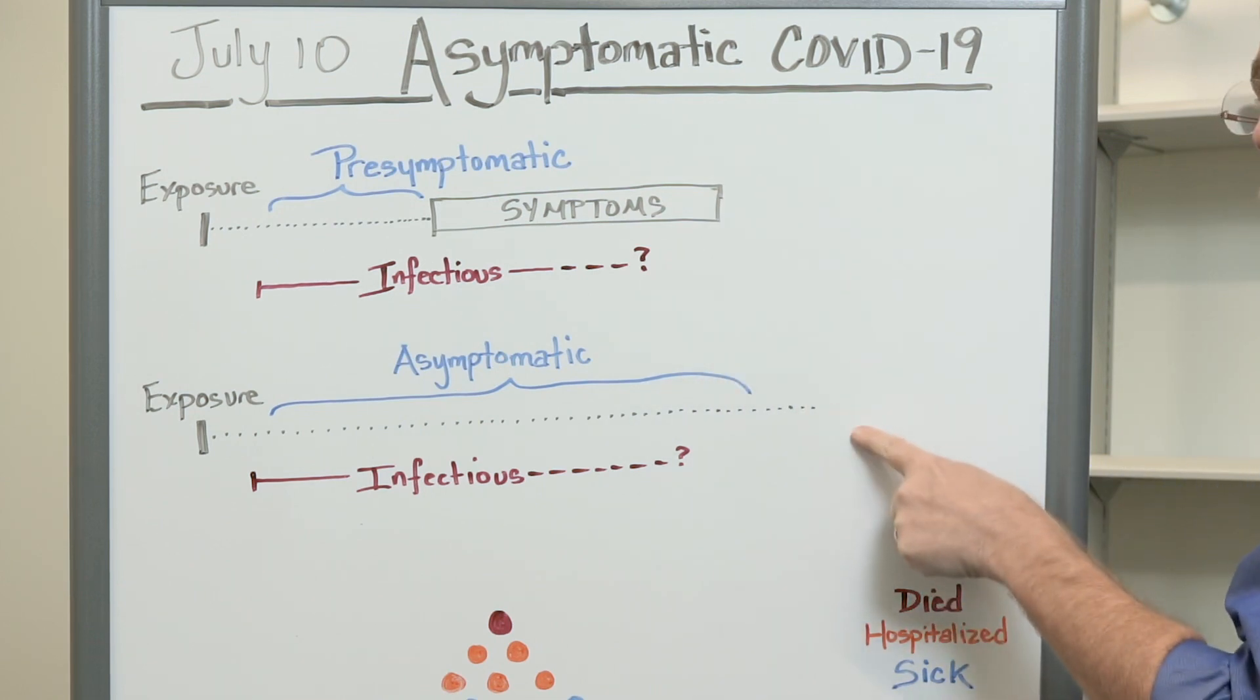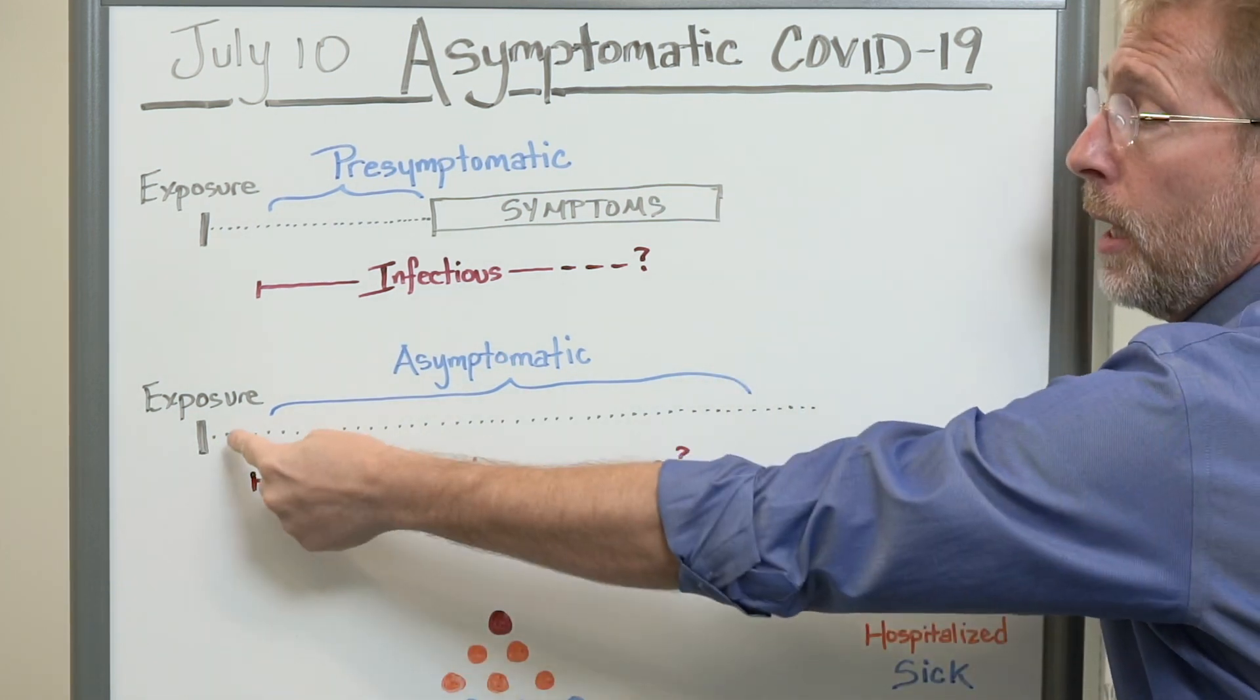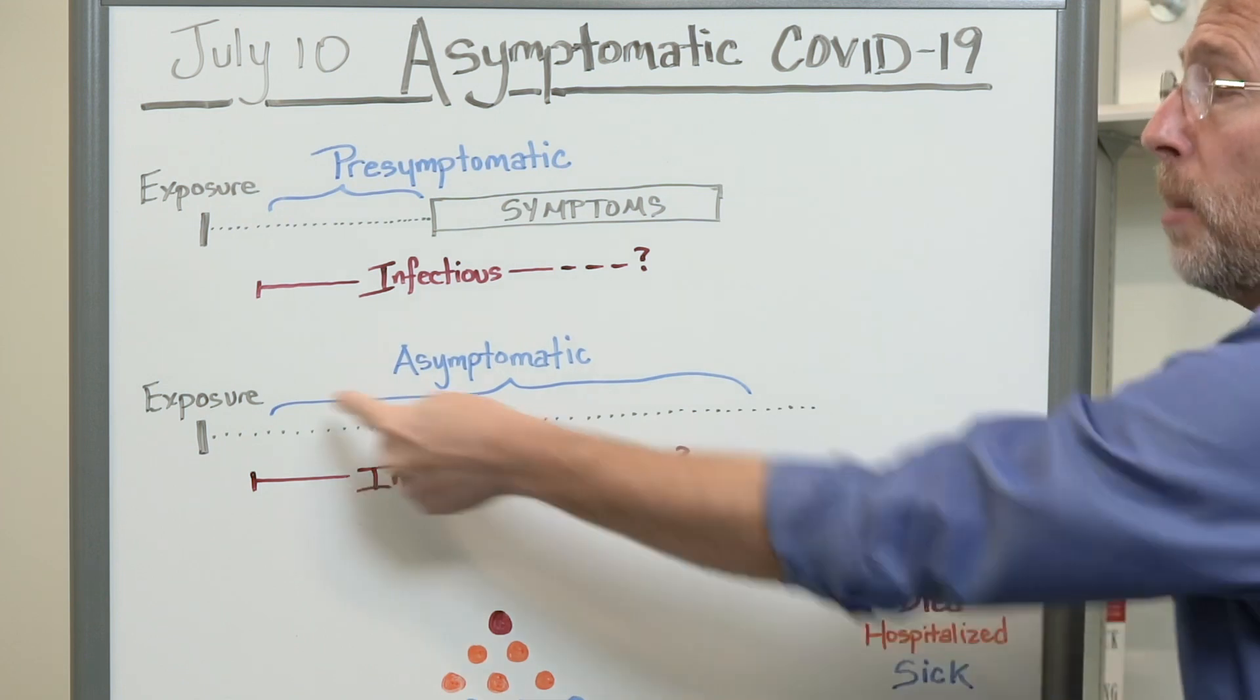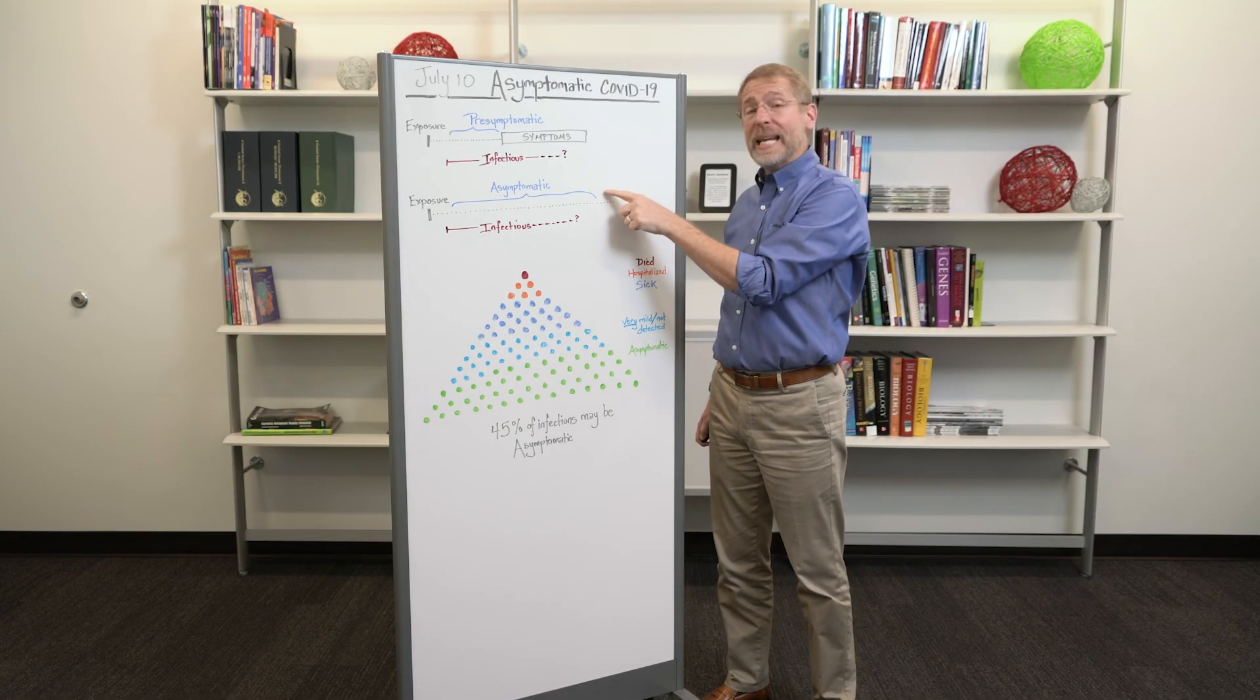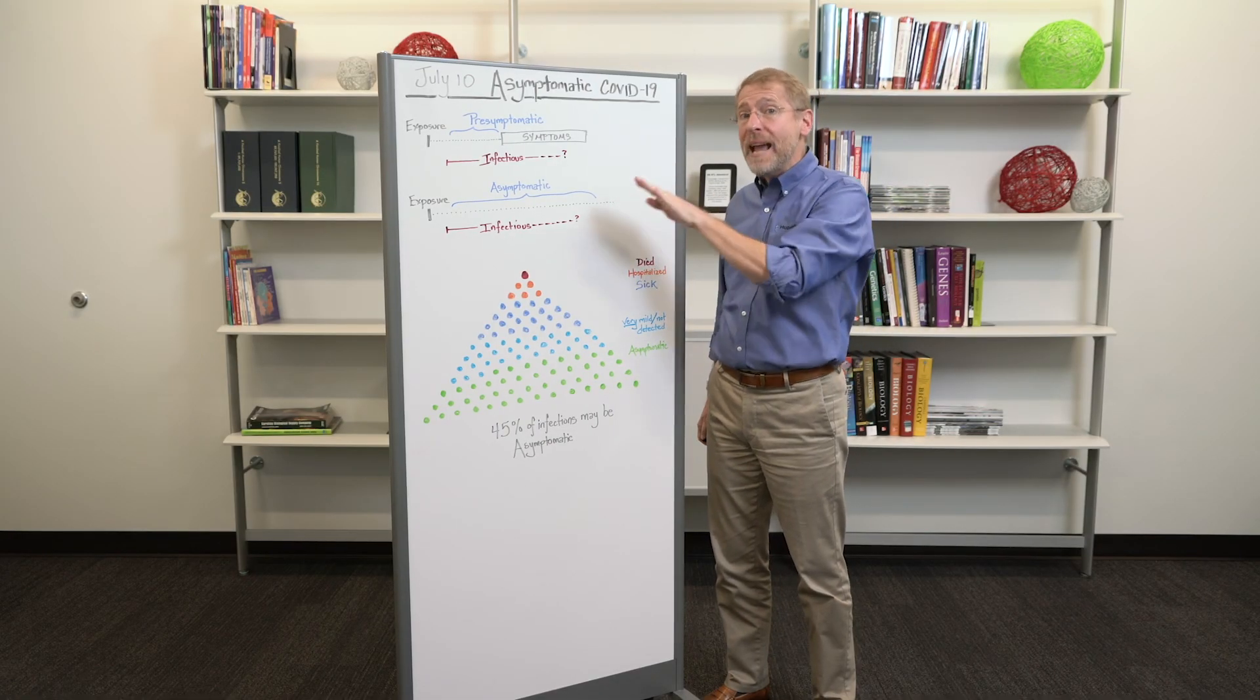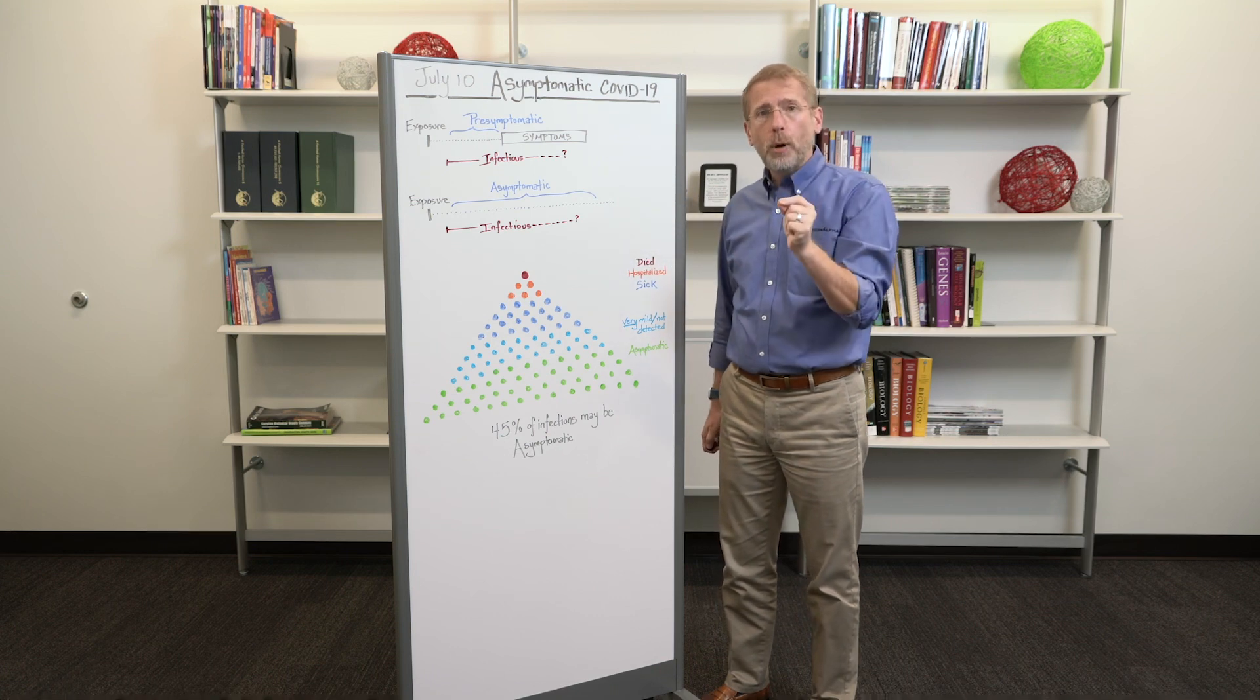Now compare that to this individual who's exposed and is infectious but never develops any outwardly apparent signs of the disease. They are an asymptomatic individual. They never develop symptoms.